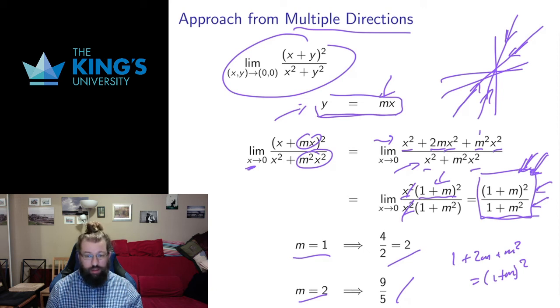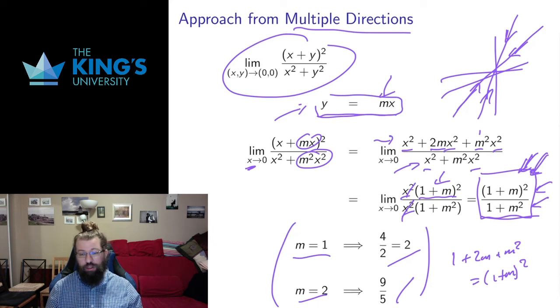That means the limit cannot exist. If the limit existed, it would be the same regardless of what direction I approached. By proving that the limit depends on the direction of approach, I prove that the limit fails. This is one of the most common ways to prove that multivariable limits fail by choosing certain directions of approach.